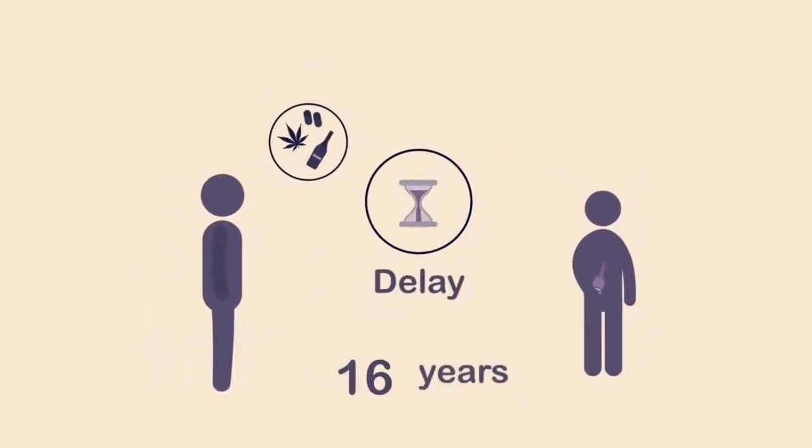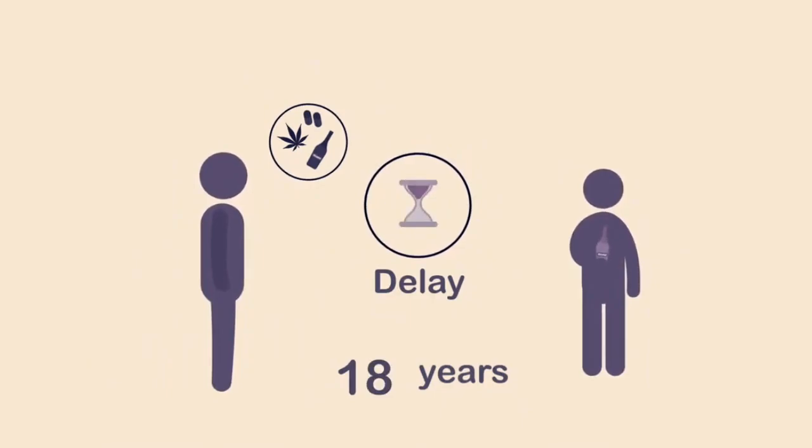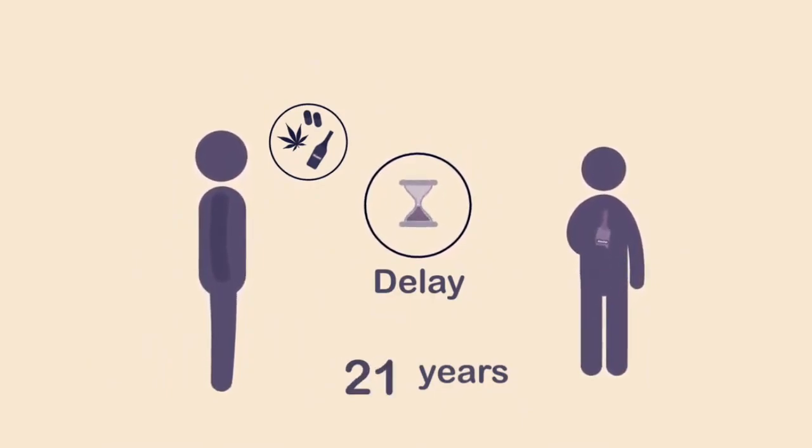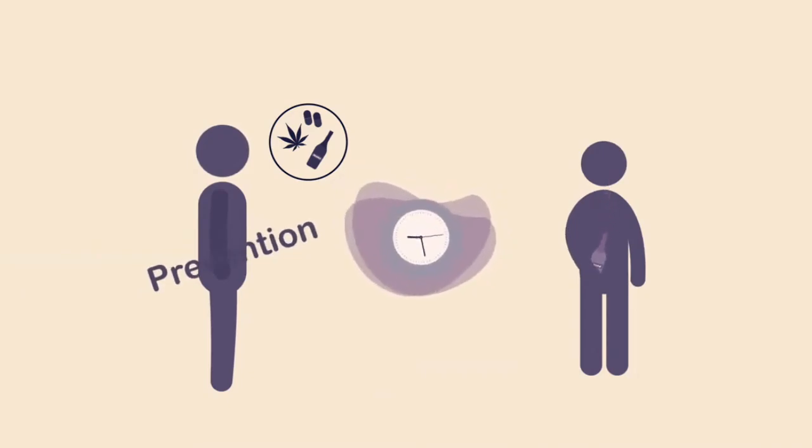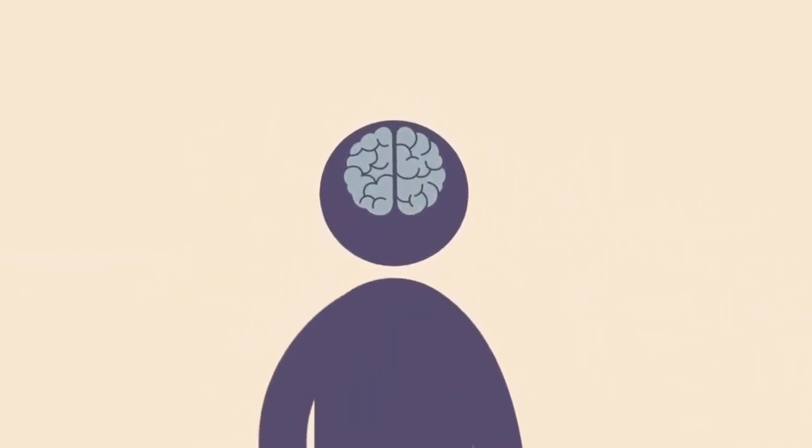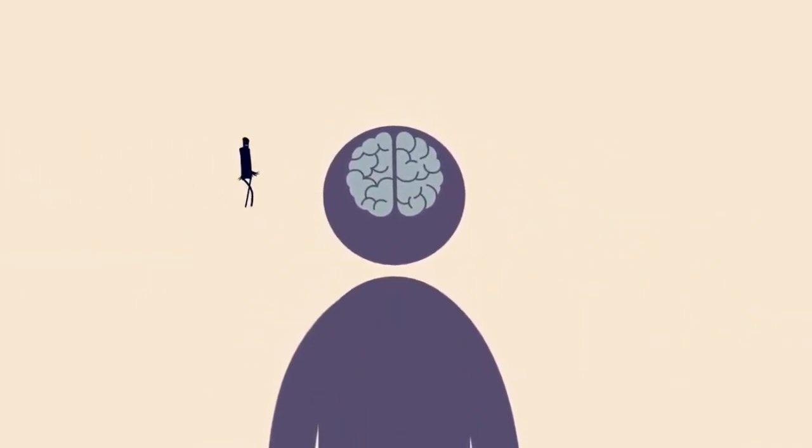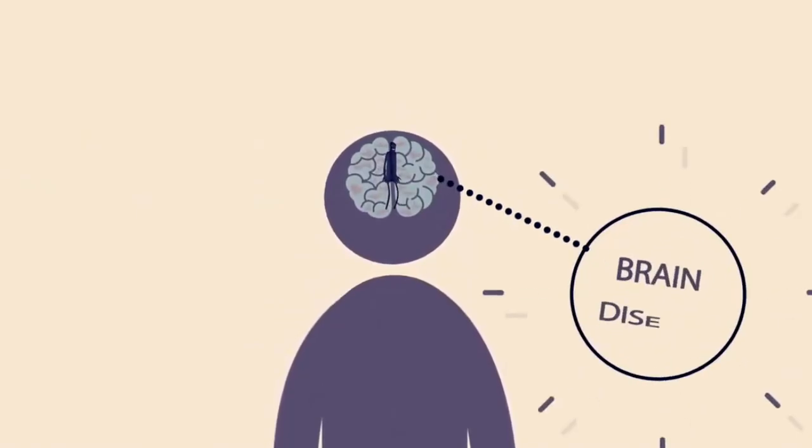Another key element in preventing addiction is to delay when use begins. Put simply, prevention is about delaying the onset of first use. In the adolescent brain, where brain tissue is more vulnerable, the hijacker is more prone to weaken the brain and plant itself as a disease.